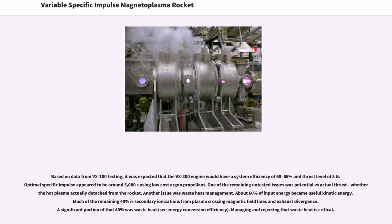Based on data from VX-100 testing, it was expected that the VX-200 engine would have a system efficiency of 60 to 65% and thrust level of 5 N, and optimal specific impulse appeared to be around 5000 seconds using low-cost argon propellant. One of the remaining untested issues was potential versus actual thrust, whether hot plasma actually detached from the rocket. Another issue was waste heat management. About 60% of input energy became useful kinetic energy. Much of the remaining 40% is secondary ionizations from plasma crossing magnetic field lines and exhaust divergence. A significant portion of that 40% was waste heat.